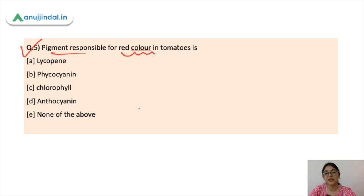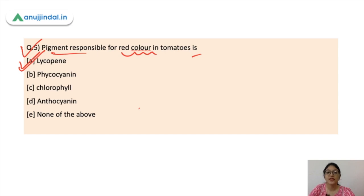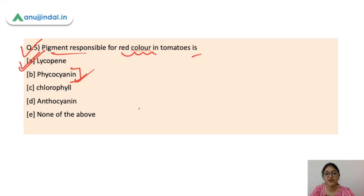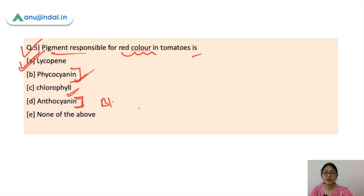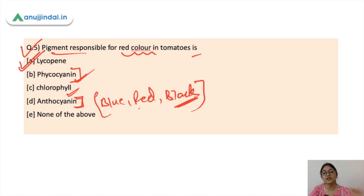Question number five: the pigment responsible for the red color in tomatoes is what? The options are lycopene, phycocyanin, chlorophyll, anthocyanin, or none of the above. The correct option is lycopene — lycopene is the pigment responsible for the red color in tomatoes. Phycocyanin is a blue photosynthetic pigment seen in some foods. Chlorophyll gives a green color. Anthocyanin is responsible for dark colors — blue, red, black — seen in flowers and petals. Remember these pigments.